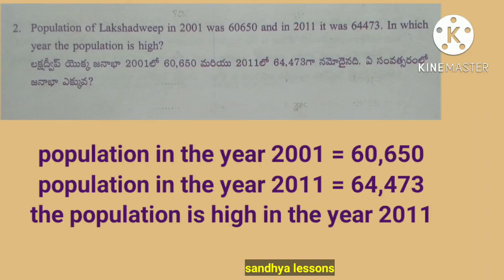Second problem: the population of Lakshadweep in 2001 was 60,650 and in 2011 it was 64,473. In which year was the population higher? Solution: population in 2001 is 60,650; population in 2011 is 64,473. Therefore, the population is higher in the year 2011.